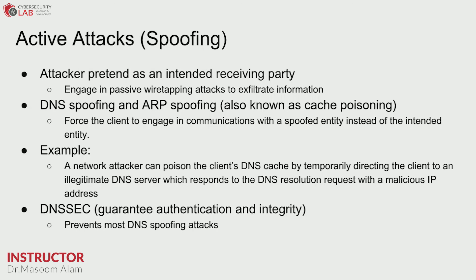Spoofing is another active attack in which we try to spoof the identity of a party — for example, DNS spoofing and ARP spoofing, also known as cache poisoning. In DNS spoofing, a network attacker poisons the client's DNS cache by temporarily directing the client to an illegitimate DNS server. This causes the client to resolve a domain name through the illegitimate server, receiving the IP address of a malicious server and communicating with it instead of the legitimate server.